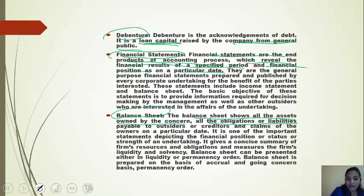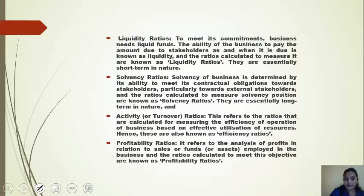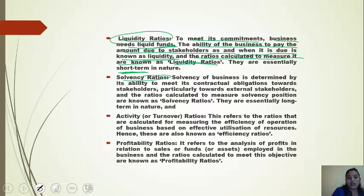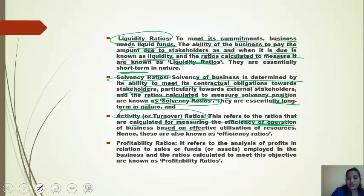Liquidity ratio measures a business's ability to pay amounts due to stakeholders as and when they fall due. Solvency ratio determines the business's ability to meet its contractual obligations towards stakeholders and is of a long-term nature. Activity or turnover ratio refers to ratios calculated for measuring the efficiency of operations of a business based on effective utilization of resources.